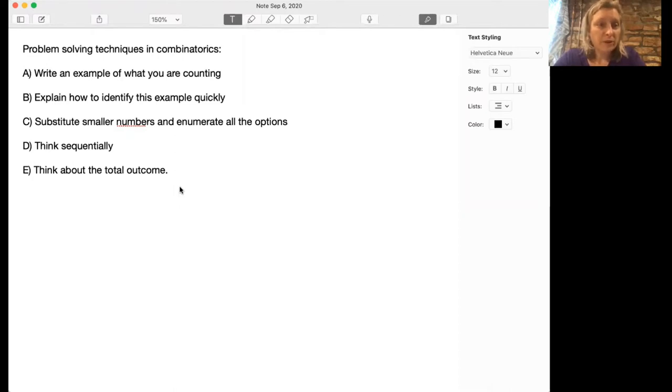It's sometimes very helpful to explain how to identify this example quickly. Sometimes it helps people to enumerate all the options, just write everything out. This is really only possible for small numbers, or if you want to program it on SAGE. Sometimes you can even substitute smaller numbers or a smaller situation into your problem, write out all those options, and then try to think what would happen if you went up to bigger numbers.